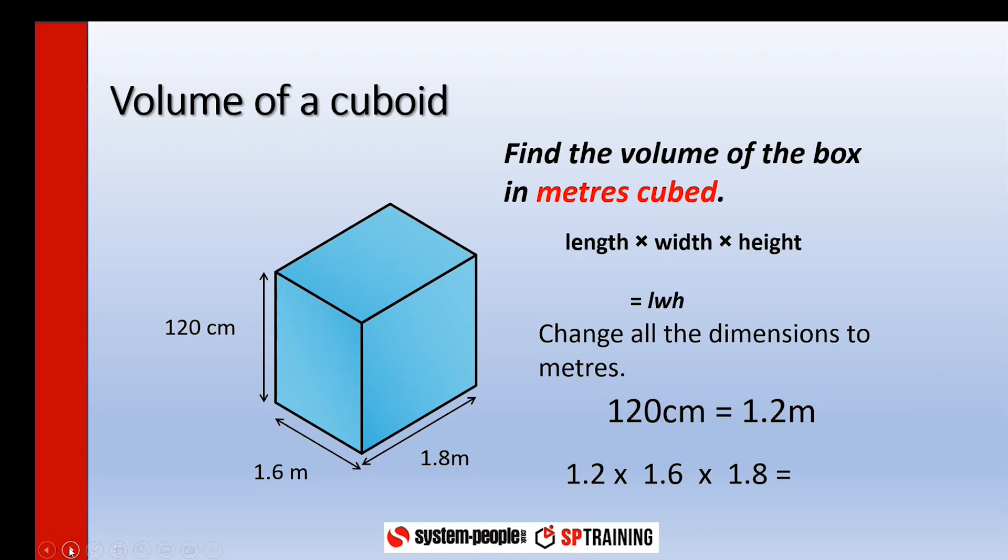And we end up with 3.456 meters cubed. Don't forget that 3 above the M there. Whatever the units are for volume, you must have them in the units cubed because there are three dimensions.